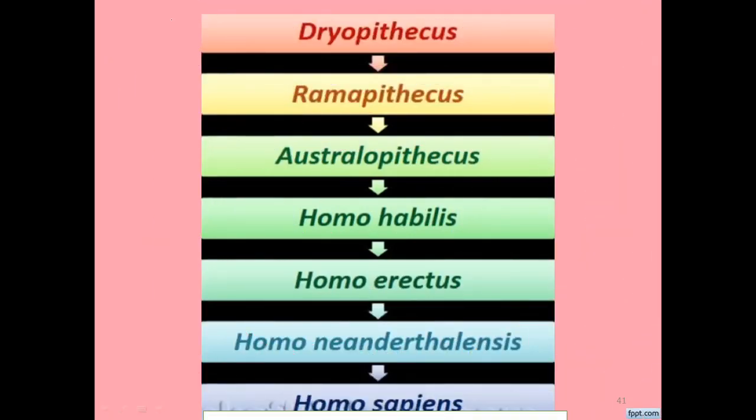As the cranial capacity of human beings increased over a period of time, the larger size of the frontal lobe helped in the development of a huge forehead. In addition, intelligence increased from Australopithecus to Homo habilis, Homo habilis to Homo erectus, to Neanderthal Man, and towards Homo sapiens — showing increasing cranial capacity in human evolution.